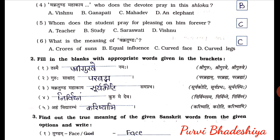Next exercise, exercise number two: fill in the blanks with appropriate words given in the brackets. Blanks are given and in brackets the options are provided, so we have to choose the correct option and fill the blank. First one: Tashmai blank namah — the answer is Shri Guruve. So: Tashmai Shri Guruve namah.